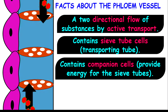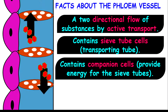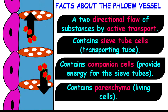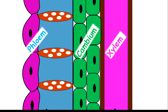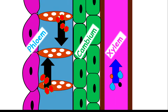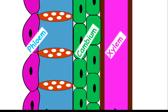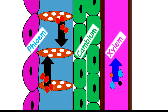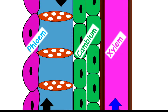Companion cells are packed with mitochondria to provide energy by means of respiration. The phloem vessel also contains parenchyma, which are the living cells within the phloem vessel. To recap: the phloem and xylem are separated by the cambium; in the stem, phloem is closer to the outermost part while xylem is closer to the innermost part. There is a one-directional flow through the xylem, while there is a two-directional flow in the phloem.